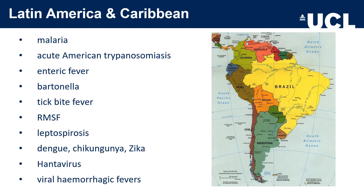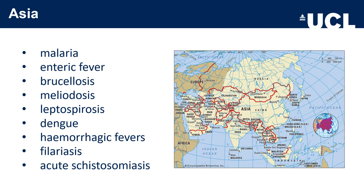Latin America and the Caribbean — including Venezuela, Colombia, Brazil, Peru, Bolivia, Argentina, Chile and Uruguay — have a widespread endemic disease burden from malaria to Rocky Mountain spotted fever, Bartonella (cat scratch disease), hantavirus, and viral haemorrhagic fevers. Asia has endemic disease including malaria, enteric fever, melioidosis, leptospira, dengue, haemorrhagic fevers and schistosomiasis.